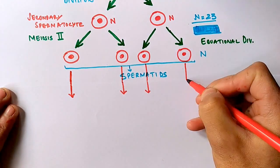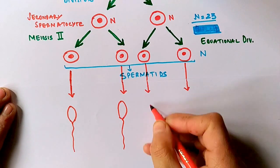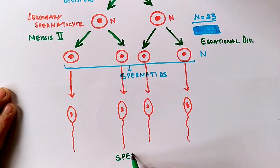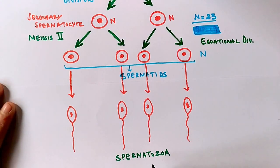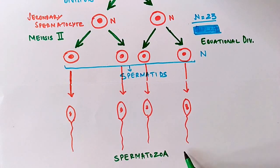Ultimately, these spermatids grow into spermatozoa by the process of spermiogenesis, which we will discuss in the next video.